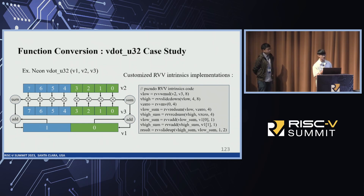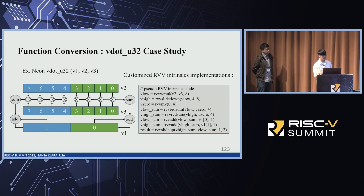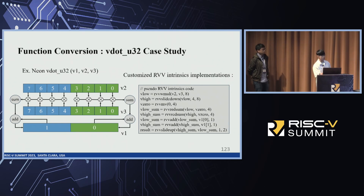Some intrinsics involve slightly more complex translation — for example, when there is no similar RVV intrinsic, or when there is a similar intrinsic but with different handling of margin values or number of values. Here is a Neon V dot product example. As shown in the diagram, vdot with 32-bit size performs two dot products separately on the lower four elements and higher four elements, and adds the result vector to V1. We use a custom RVV intrinsic implementation: first, use RVV widening multiply to multiply V2 and V3 registers; then use RVV slide-down to slide Vlow by four elements; separately use RVV reduction sum to sum Vlow and Vhigh; and finally, add Vlow sum with the first element in V1, add Vhigh sum with the second element in V1, and use slide-up to merge the results.